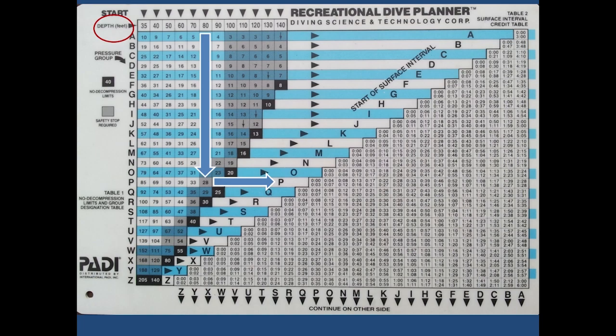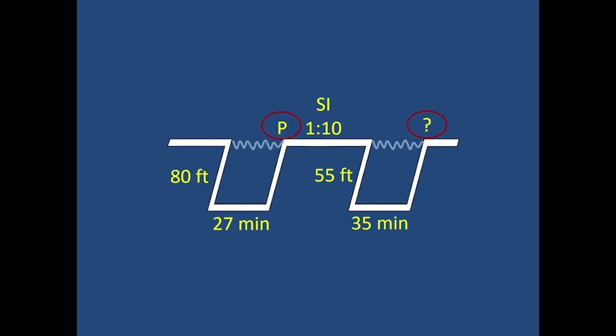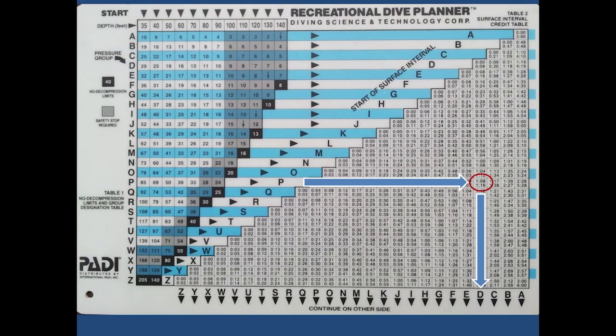Find the depth 80 feet. Go down the column to find the dive time which is 27. Move to the right following the arrow to find the pressure group after the first dive. In this case is the letter P. Pressure group P. Write it down. First dive. Keep moving to the right.